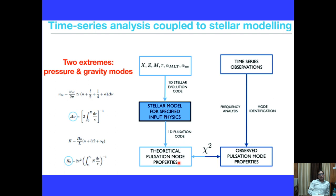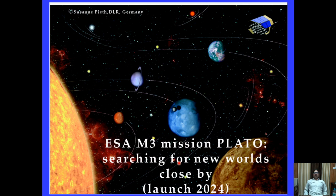Using estimation from astro-seismology, one can literally see what is happening inside a star — the different layers going up and down. After Kepler, the European Space Agency plans to launch PLATO (PLAnetary Transits and Oscillations of stars) in 2024, with objectives similar to Kepler: searching for exoplanets around nearby stars and performing astro-seismology.